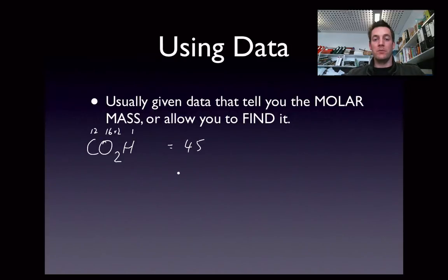So if I was told for example that the molar mass was 90, or if I was given some information that enabled me to find that, then I'd know the actual formula would have to be twice as big because the molar mass is twice as heavy as this. If it was 135, it's three times as heavy, so the molecular formula would have to be C3O6H3.